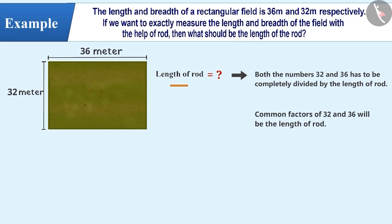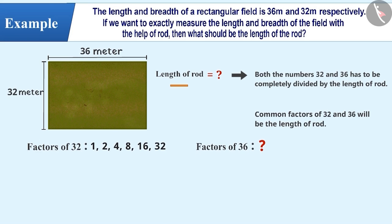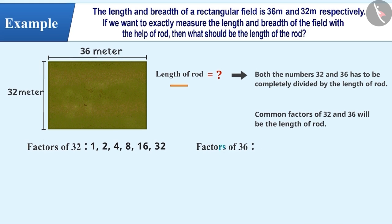Let's find the factors of 32 and 36. The factors of 32 are 1, 2, 4, 8, 16, and 32. The factors of 36 are 1, 2, 3, 4, 6, 9, 12, 18, and 36.